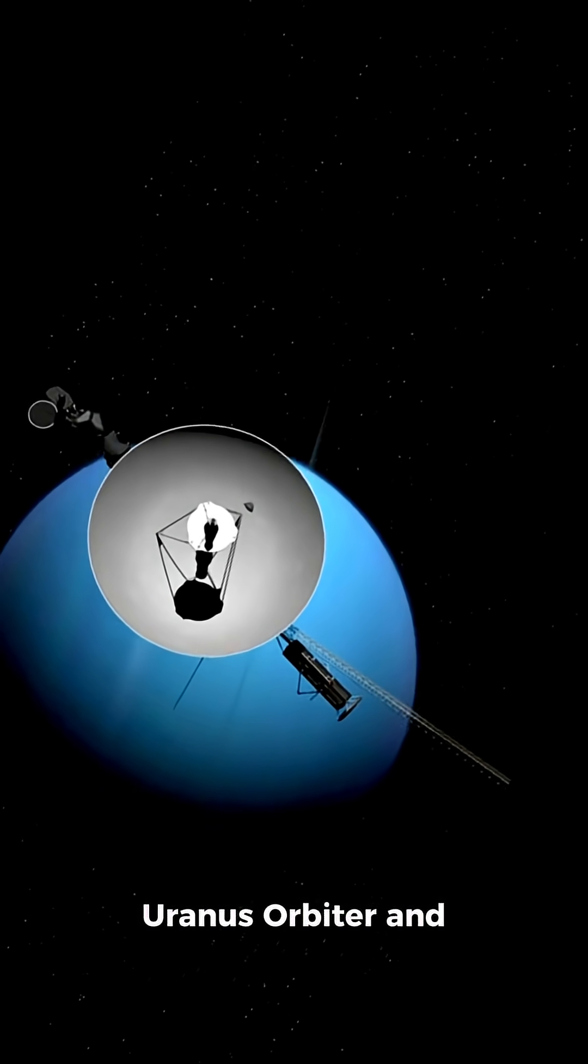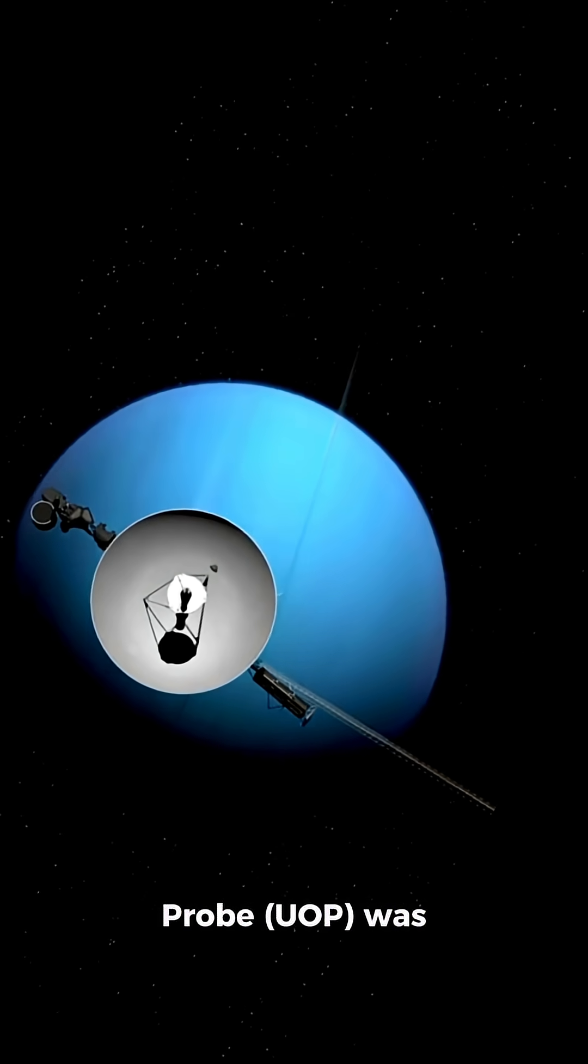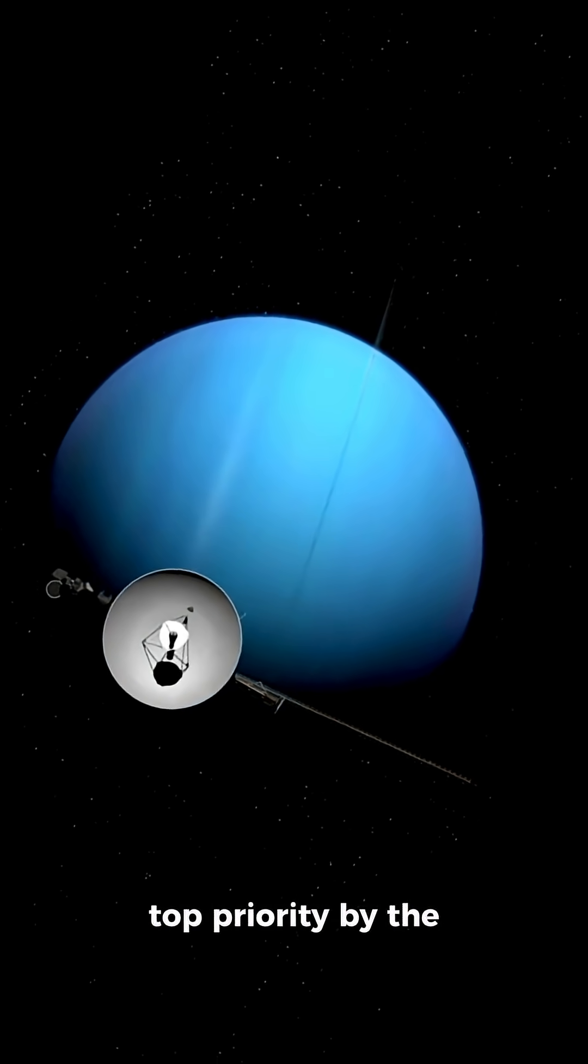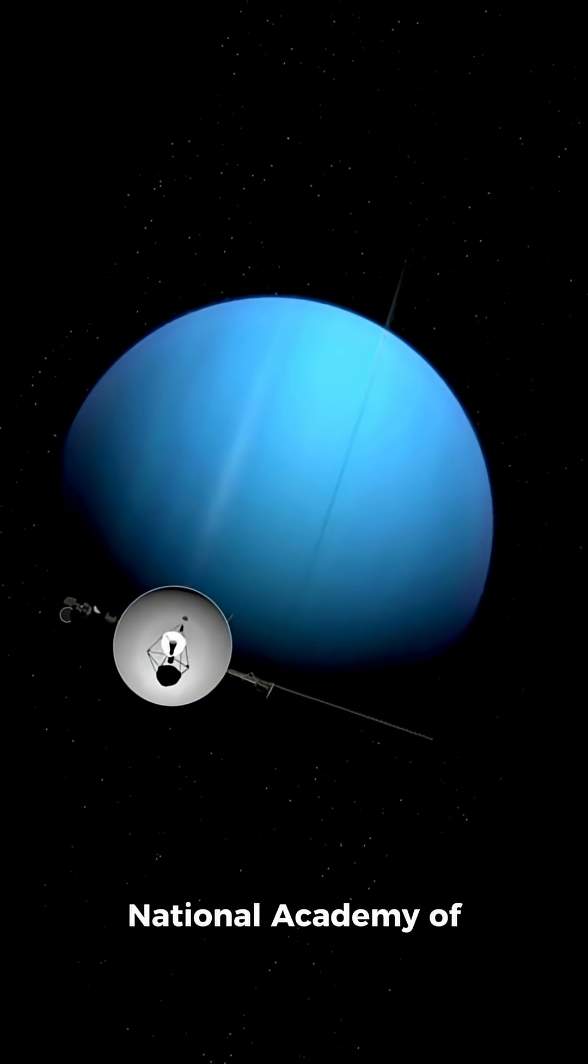NASA's proposed Uranus orbiter and probe UOP was already flagged as a top priority by the National Academy of Sciences in 2022.